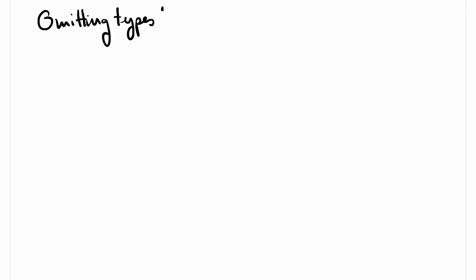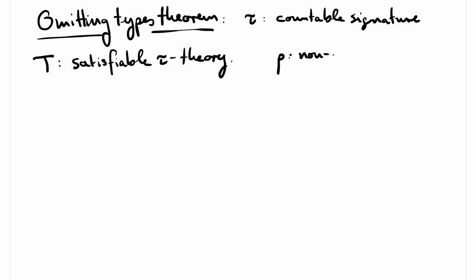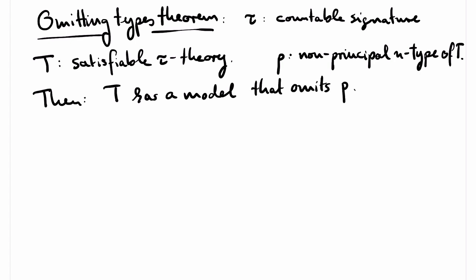For formally stating the omitting types theorem, we assume that tau is a countable signature, T is a satisfiable tau theory, and P is a non-principal n-type of T. Then T has a model that omits P. That is, a model that does not realize P.